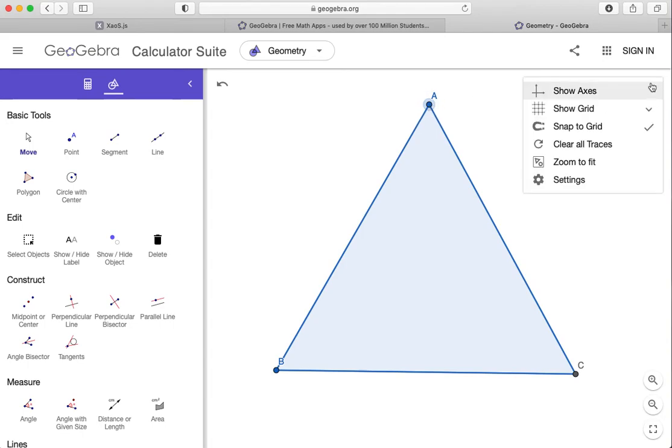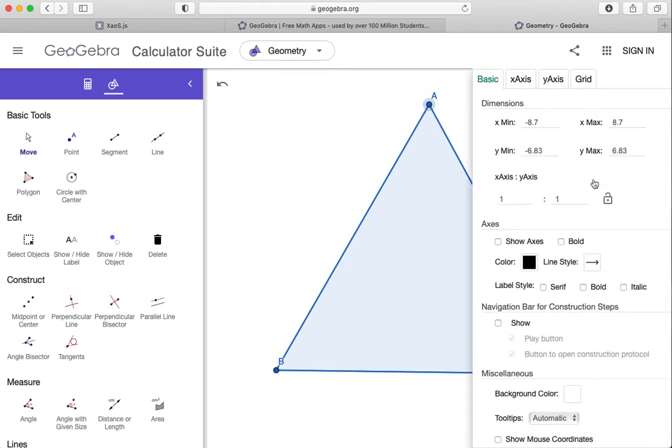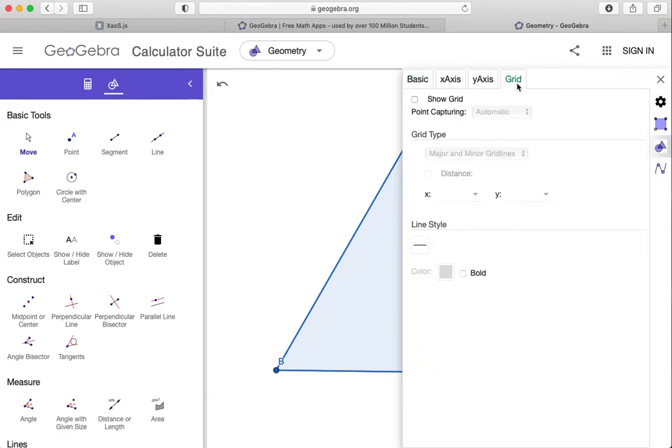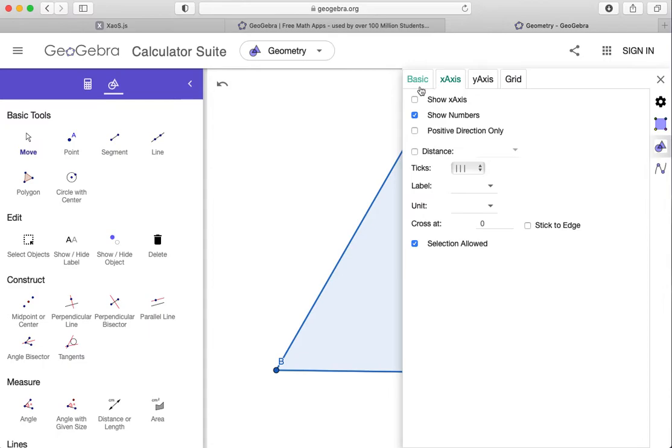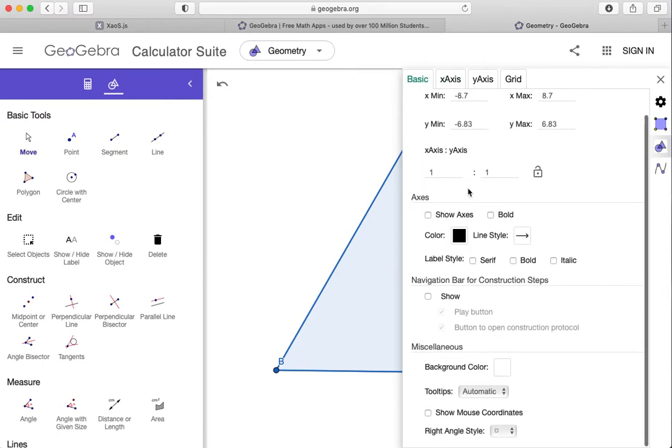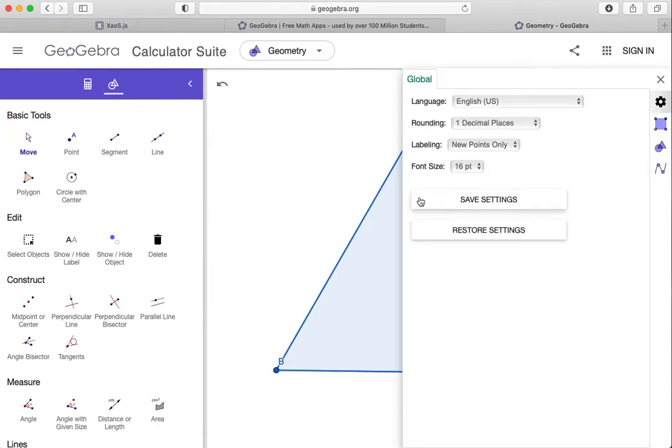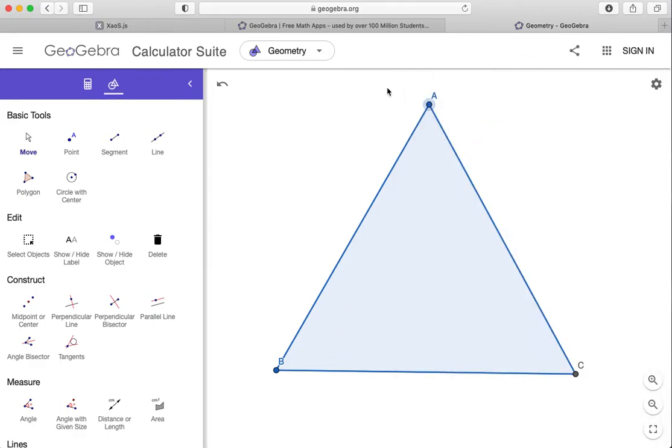I'm also going to adjust the settings here. So I'm going to click on Settings, and let's see. Here we go. Under Labeling, I want no new objects, and that's just because this is going to get busy if I have too many points going.